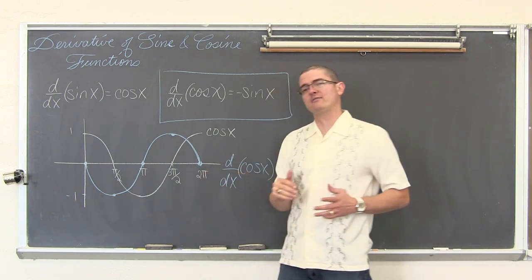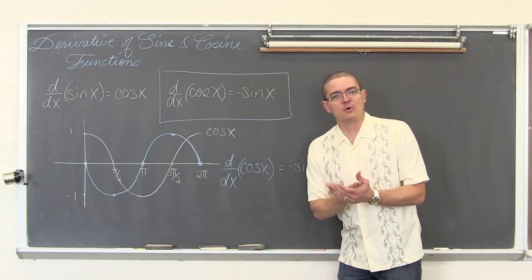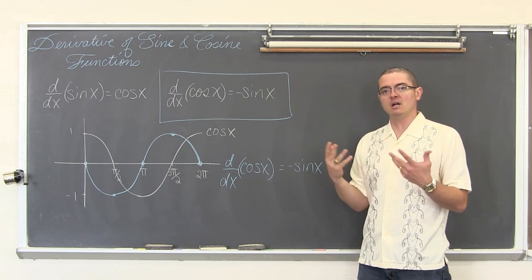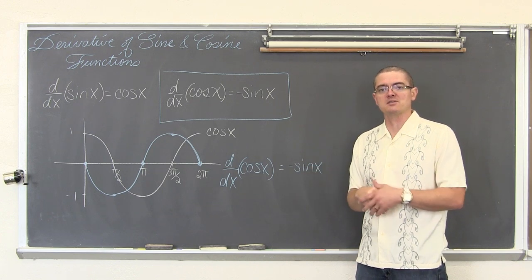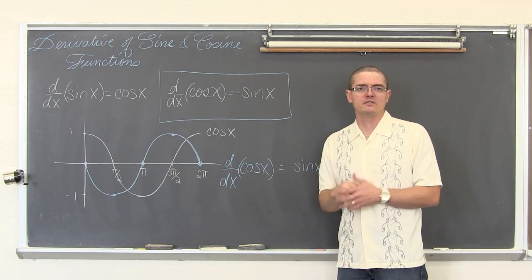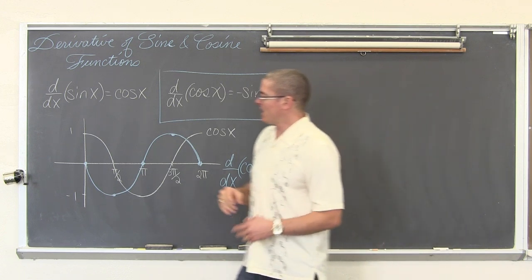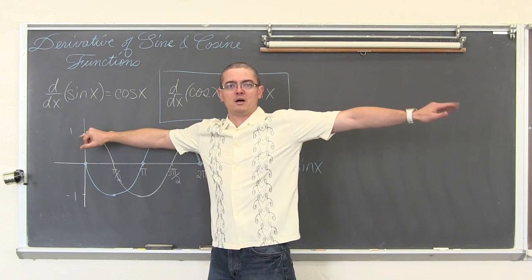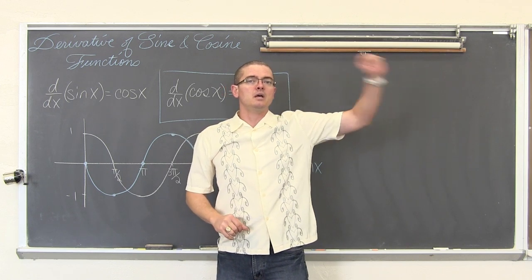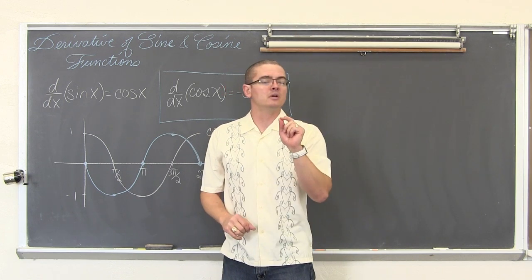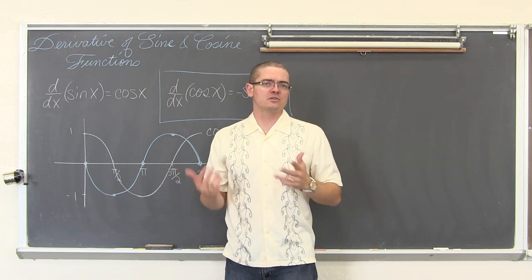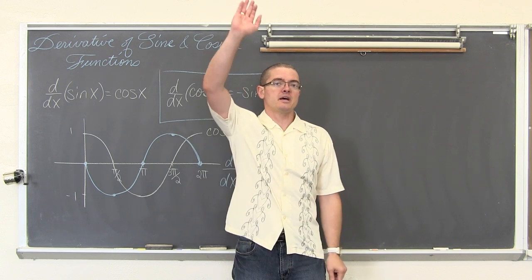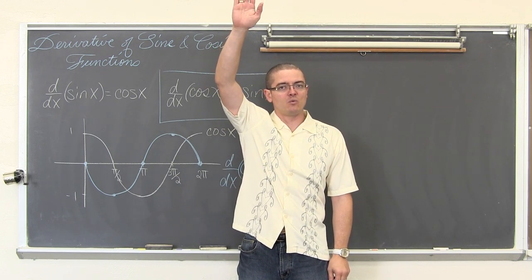For this second statement, I have drawn one period of the cosine function. I want to talk about why the derivative with respect to x of cosine of x equals negative sine of x. The derivative tells us the slope of the original function at almost any value of x. The cosine function starts at one — the cosine of zero is one. Cosine is x over r.